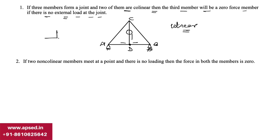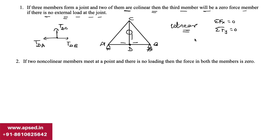We can verify this by drawing a free body diagram at joint D. We have forces TDA, TDB, and TDC. Writing the summation of vertical forces equal to zero at joint D, the only force acting in the vertical direction is TCD. Therefore, TCD must equal zero, confirming that if three members meet at a joint and two are collinear, the force in the third member is zero.